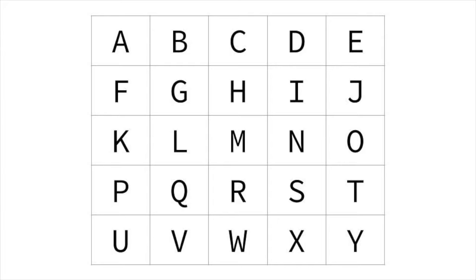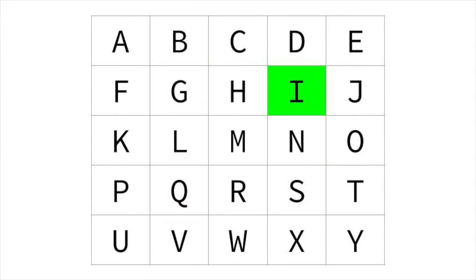Let's imagine an algorithm to do this. Imagine we've picked a first letter — what can we do? We can go to any letter connected to this first letter. From each of those, we can go to any letter connected to the one we pick, and so on. However, we can't repeat letters, so we'll have to keep track of that.